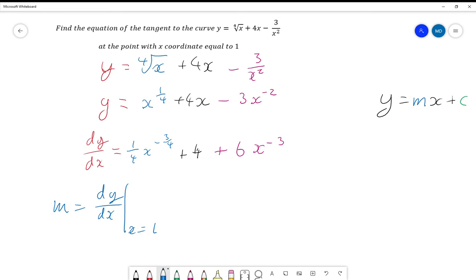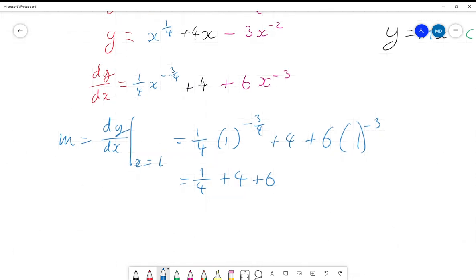Okay, so let's see what we get. We get one quarter of x is now 1, so minus three quarters, plus 4, plus 6 lots of 1 to the minus 3. And 1 to any power is still 1, so this is the same as just one quarter, plus 4, plus 6, which is 10 and a quarter, or 41 over 4.